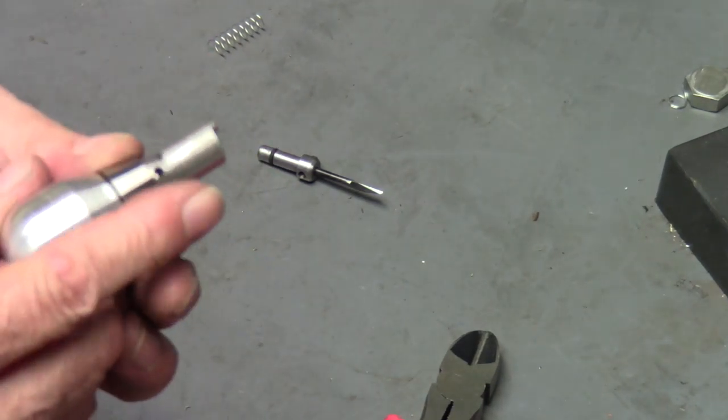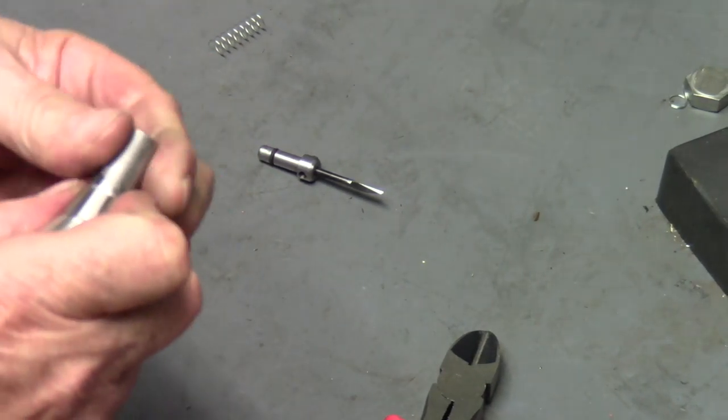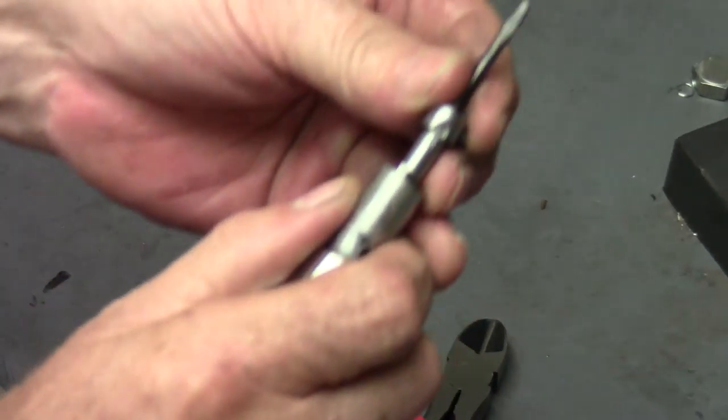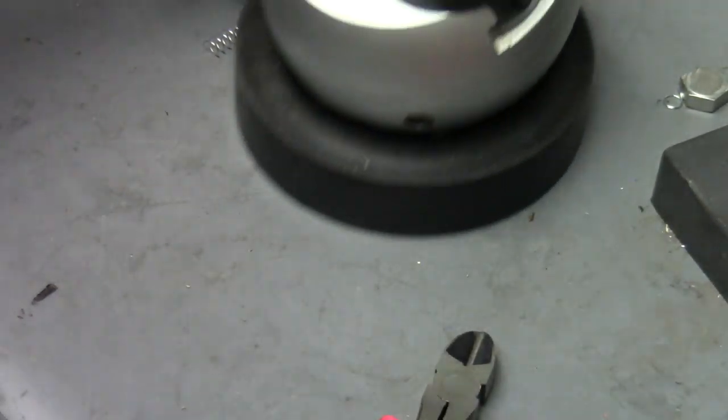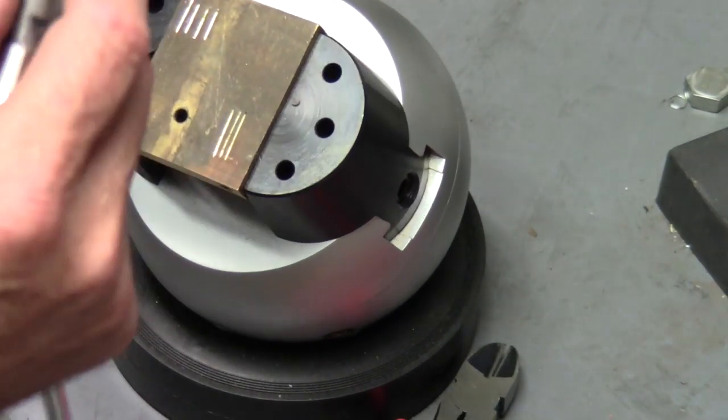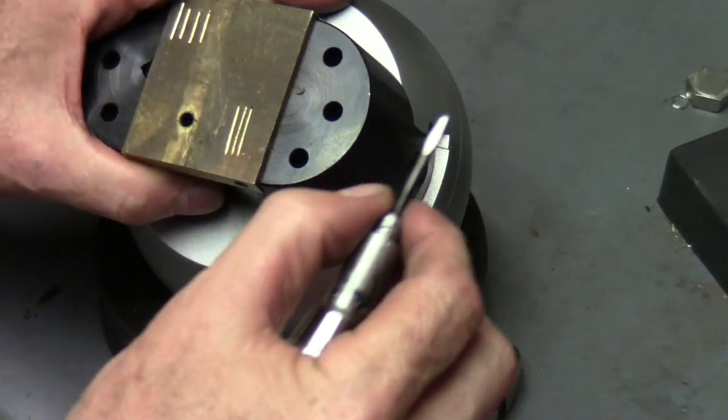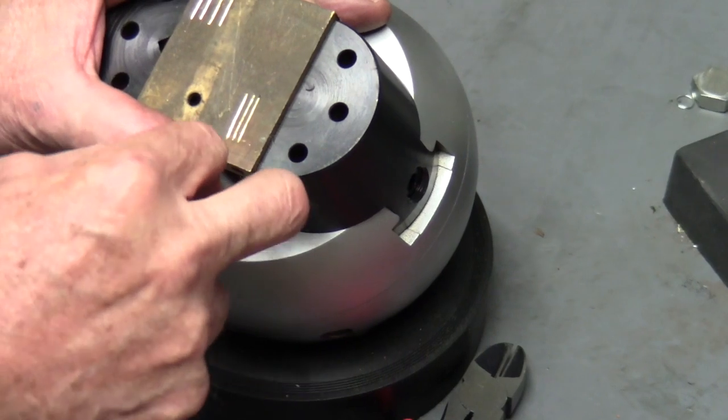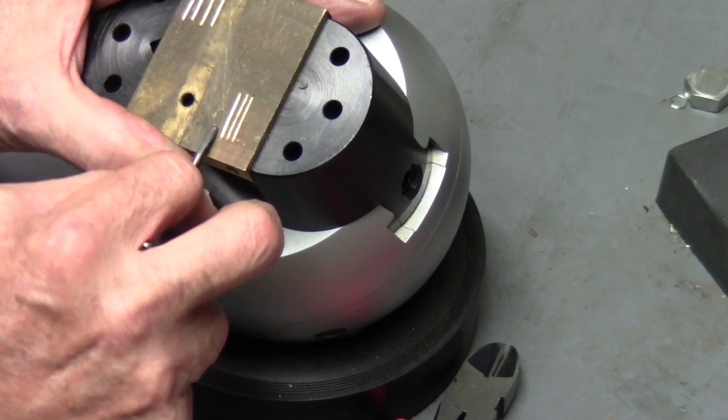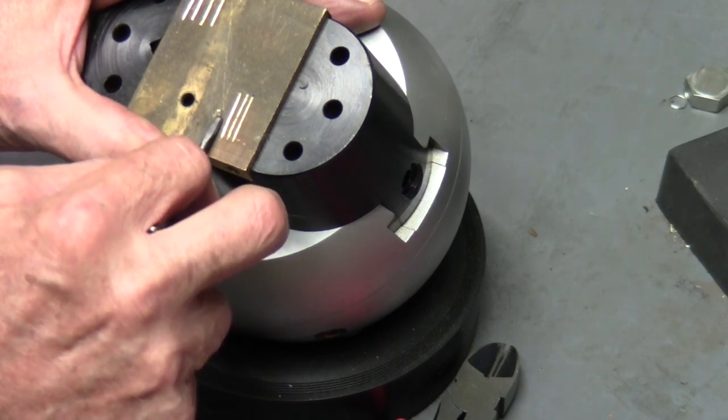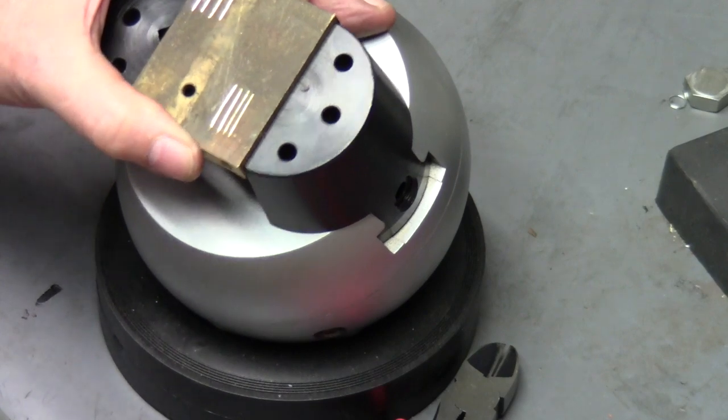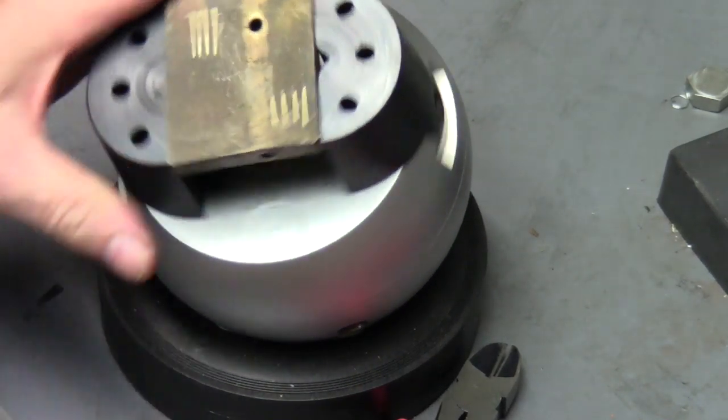Put that back in the handpiece. I'm going to try this again. Back it up, lock it down. Quick change fitting in it. Drag my ball vise back over here. Let's see what it's gonna do. Oh yeah, works like a champ.